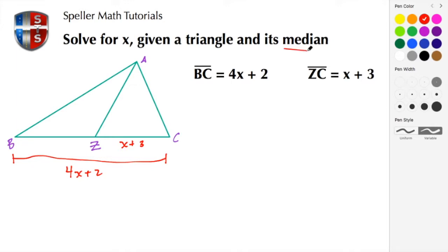We know that we have a median here because that's what's given. With the median, we know that a median bisects the segment opposite the vertex. So BZ would be congruent to ZC because of what we know about a median.